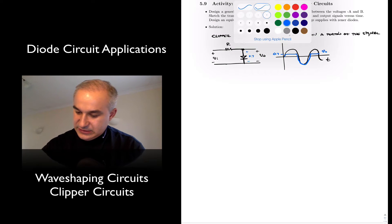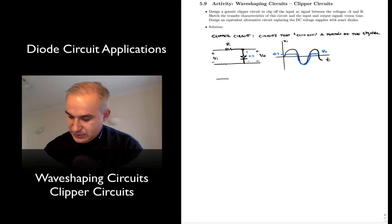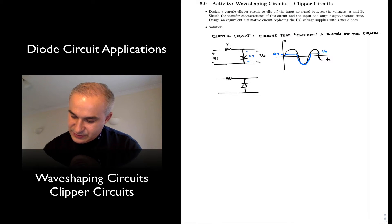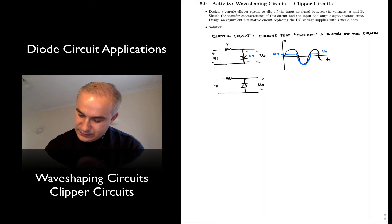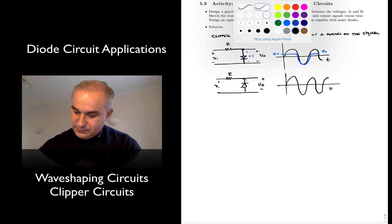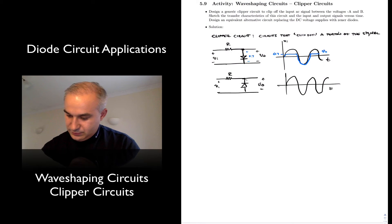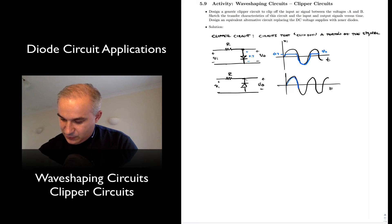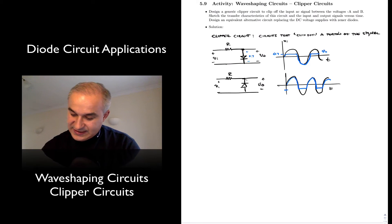What happens if we do the same circuit but place the diode in the opposite direction? In that situation, for an input waveform like that, you are going to follow the input, but you will clip it to some particular voltage. Maybe you want to protect the circuit so it doesn't go over more than a particular voltage. That is the output.